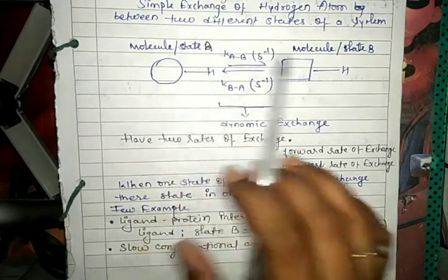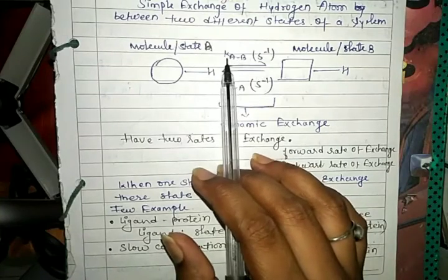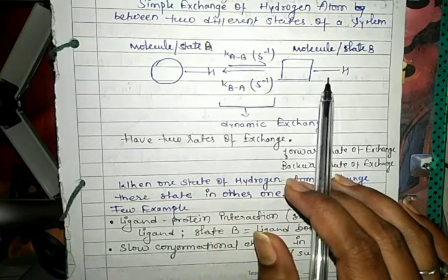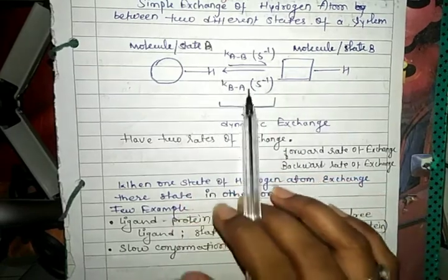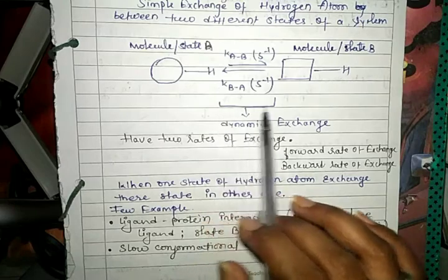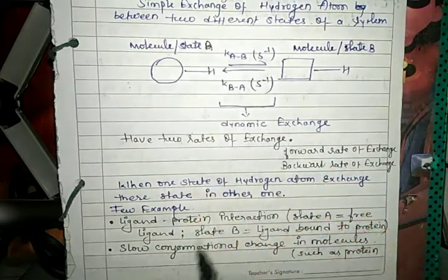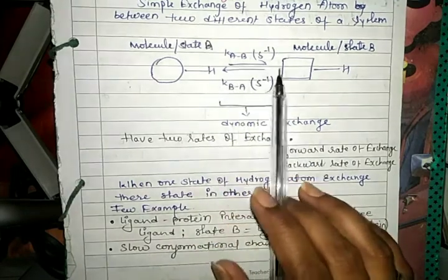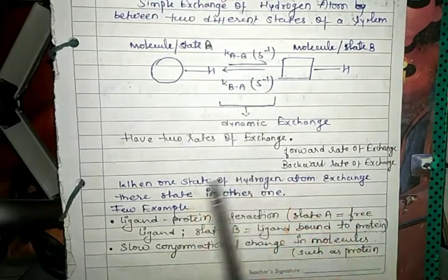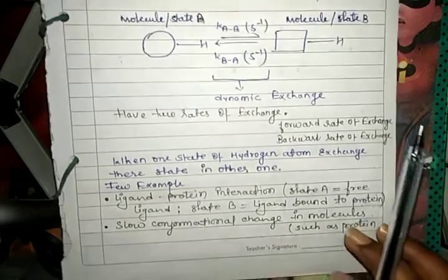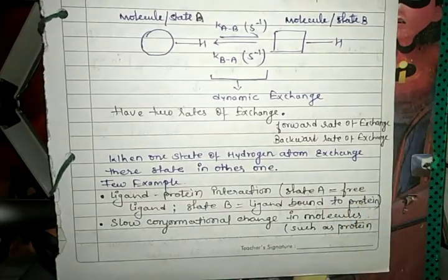The exchange of hydrogen from state A to state B has a rate of k(A→B) per second, and the exchange from state B to state A has a rate of k(B→A) per second. This is called dynamic exchange. There are two rates of exchange: the forward rate and the backward rate. When a hydrogen atom exchanges from one state to another, this is called chemical exchange.